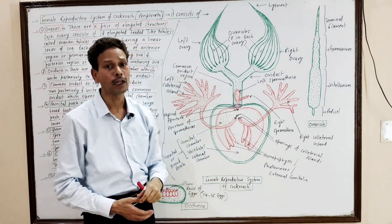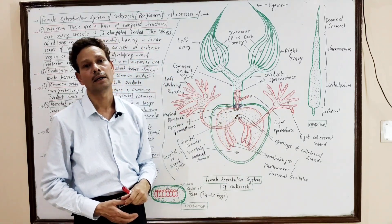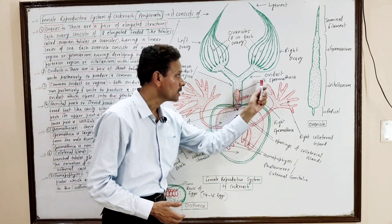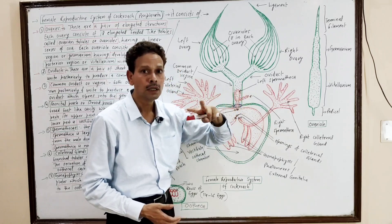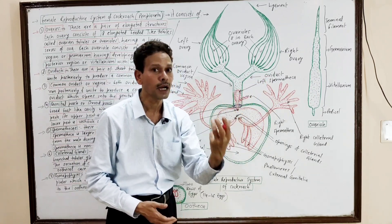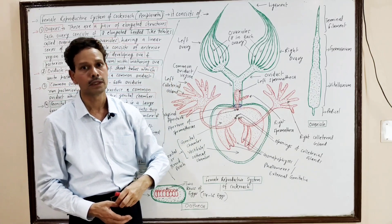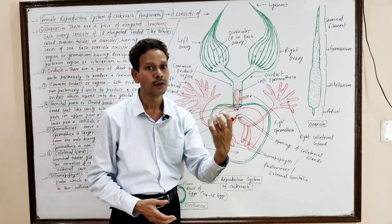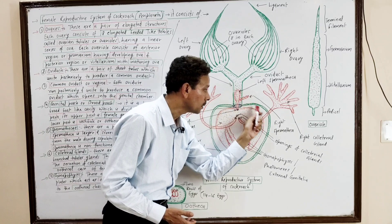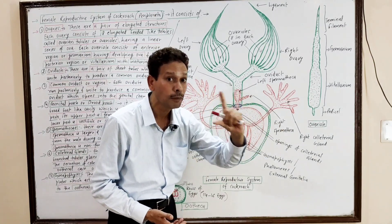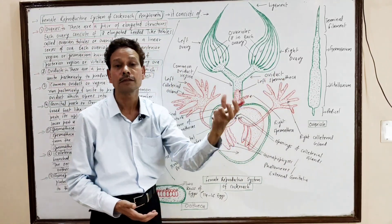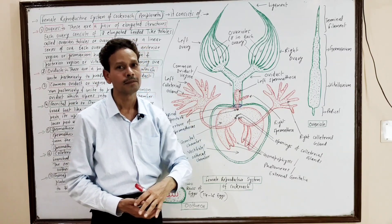In the female reproductive system, there is a pair of spermatheca. The left spermatheca is sac-like and club-shaped, and it is functional — it receives and stores sperm received from the male cockroach during copulation. The right spermatheca is an irregular tubular structure and is non-functional; it is vestigial. Only the left spermatheca is functional.